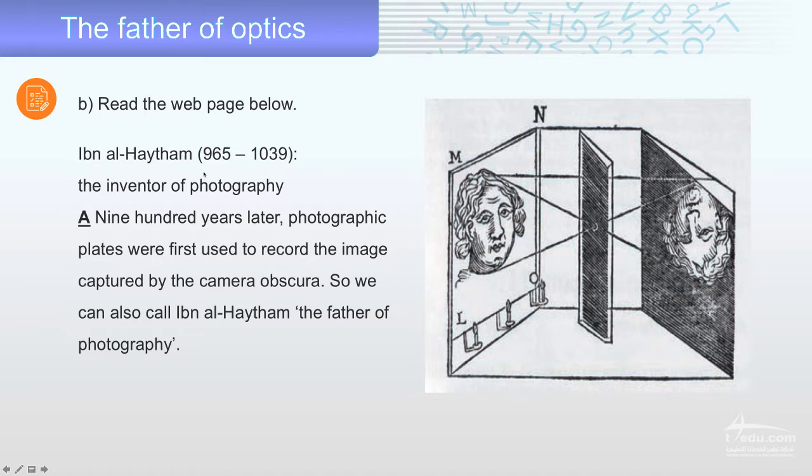Now, let's read the web page below. Ibn al-Haytham, 965-1039. The inventor, the one who invented, the one who created, of photography. 900 years later, the photographic plates were first used to record the image captured by the camera obscura. Look at the picture camera. So, we can also call Ibn al-Haytham the father of photography.